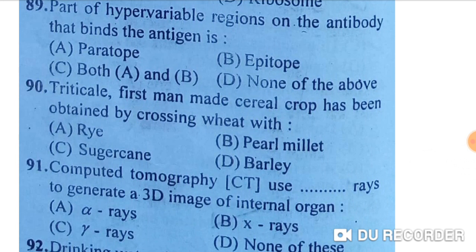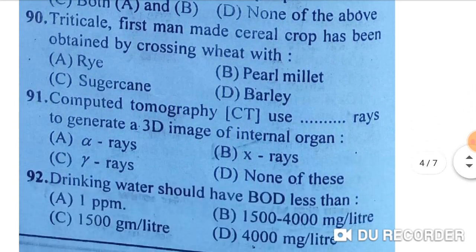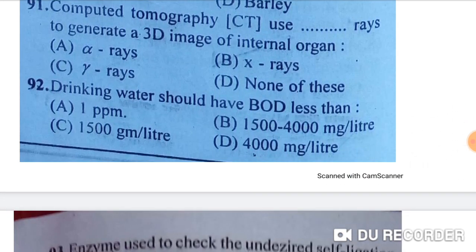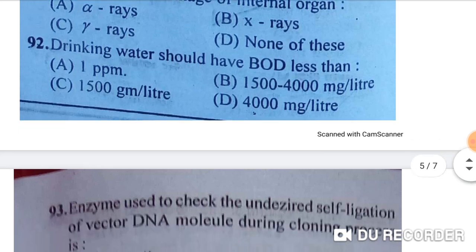The part of the hyper-variable region on an antibody that binds the antigen is called the paratope — option A is correct. Triticale, the first man-made cereal crop, has been obtained by crossing wheat with rye — option A is correct. Computed tomography (CT) uses X-rays to generate a 3D image of internal organs — option B is correct.